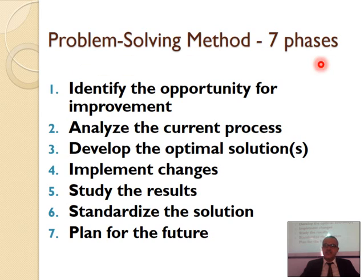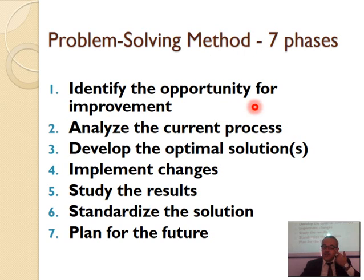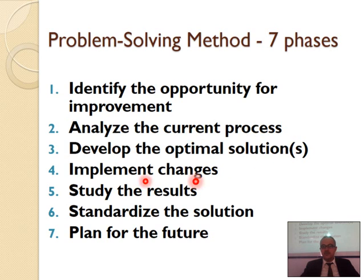Here we've got the seven-phase problem-solving method. Every time you have a problem, number one, you identify the opportunities for improvement. Then you analyze the current process. You develop an optimal solution. You implement the changes, study the results, standardize the solution, and then plan for the future.